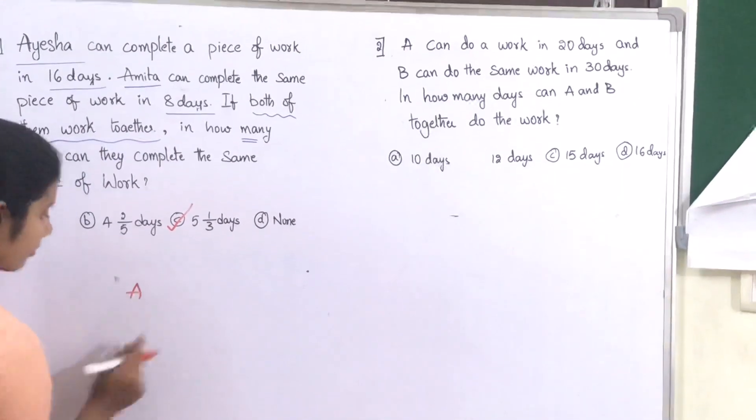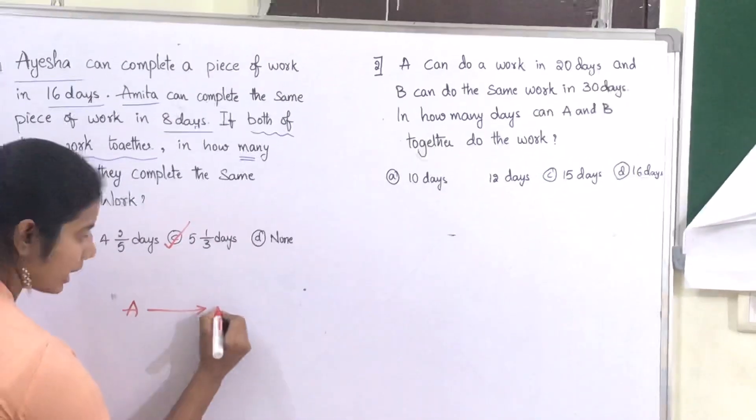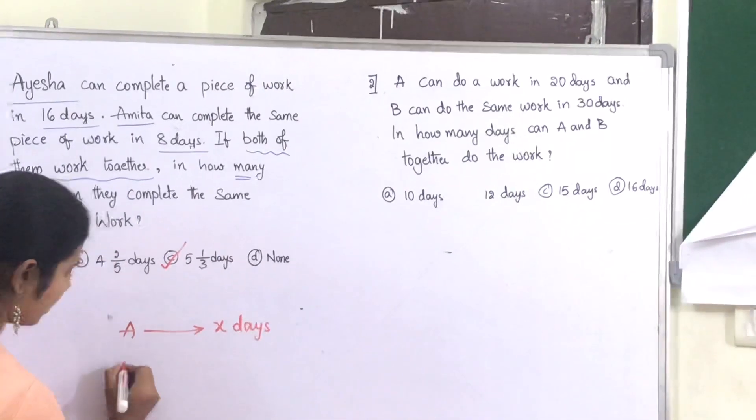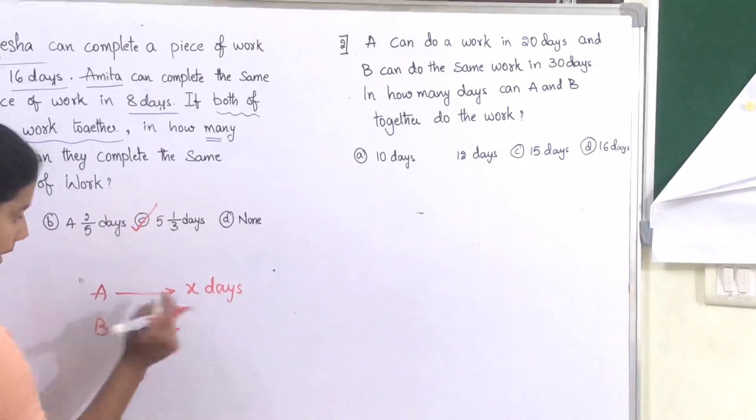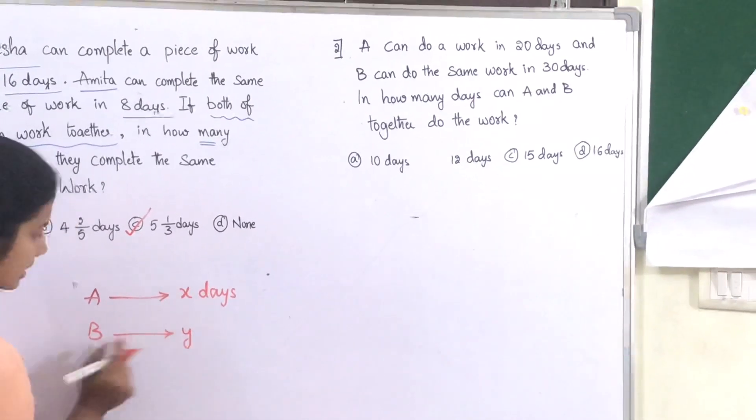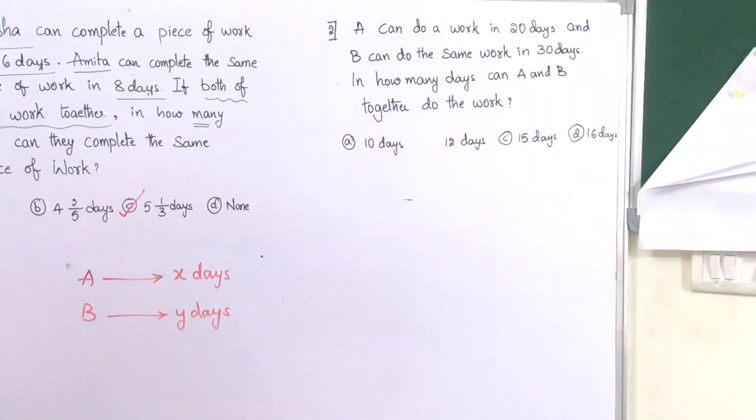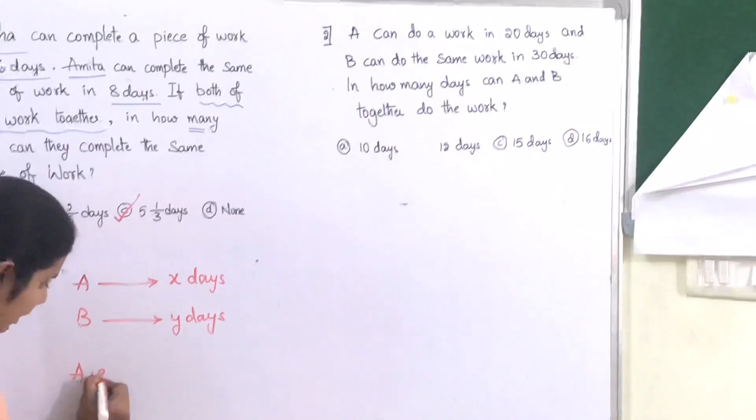Another method is: if person A completes work in X days, and B completes the same work in Y days, and if both of them work together, that means A plus B,